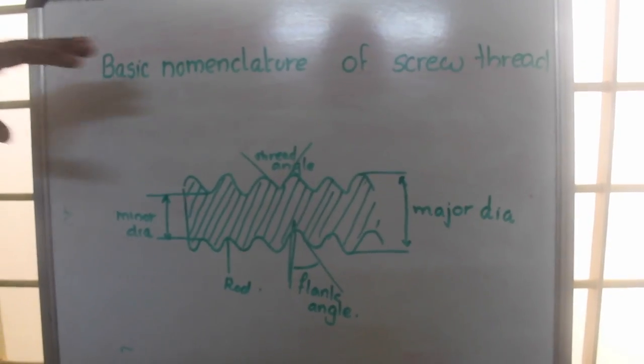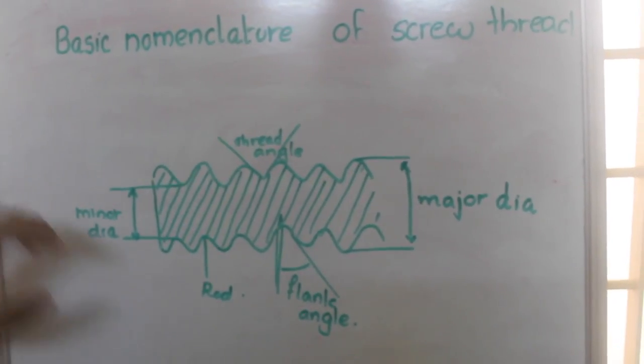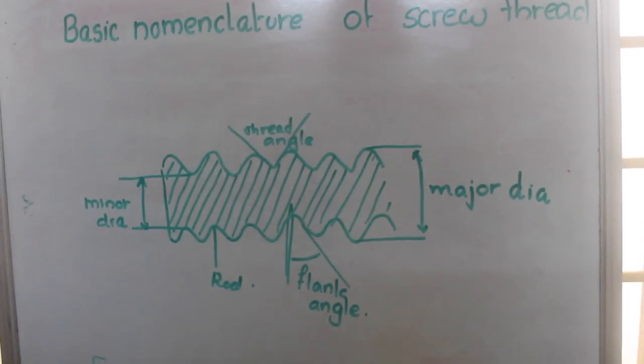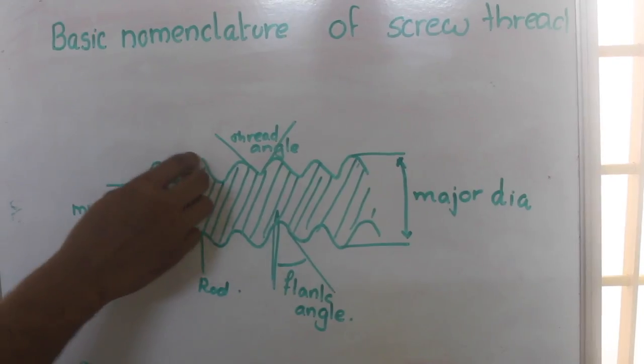So let's discuss the basic nomenclature of screw threads. Here we are having a section of a screw, and these depressions can be called as root, and this part, this elevated portion, will be called as crest.